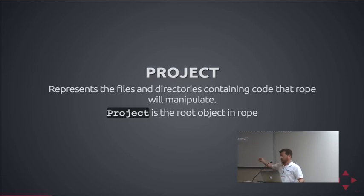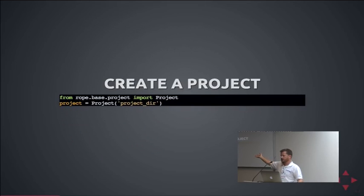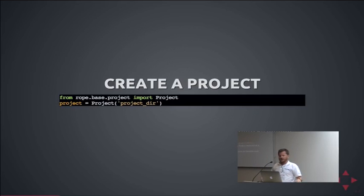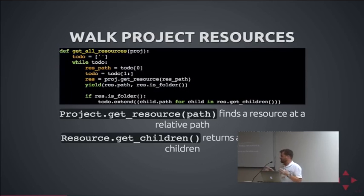You create a project just like this — it's fairly readable and that simple. It creates a little file, parses a bunch of stuff, and it's ready to go. You can walk all of the resources — files and directories — and get their children and continue walking. This is just to show the flavor of the API: it's very straightforward, really easy to understand, if a bit under-documented.